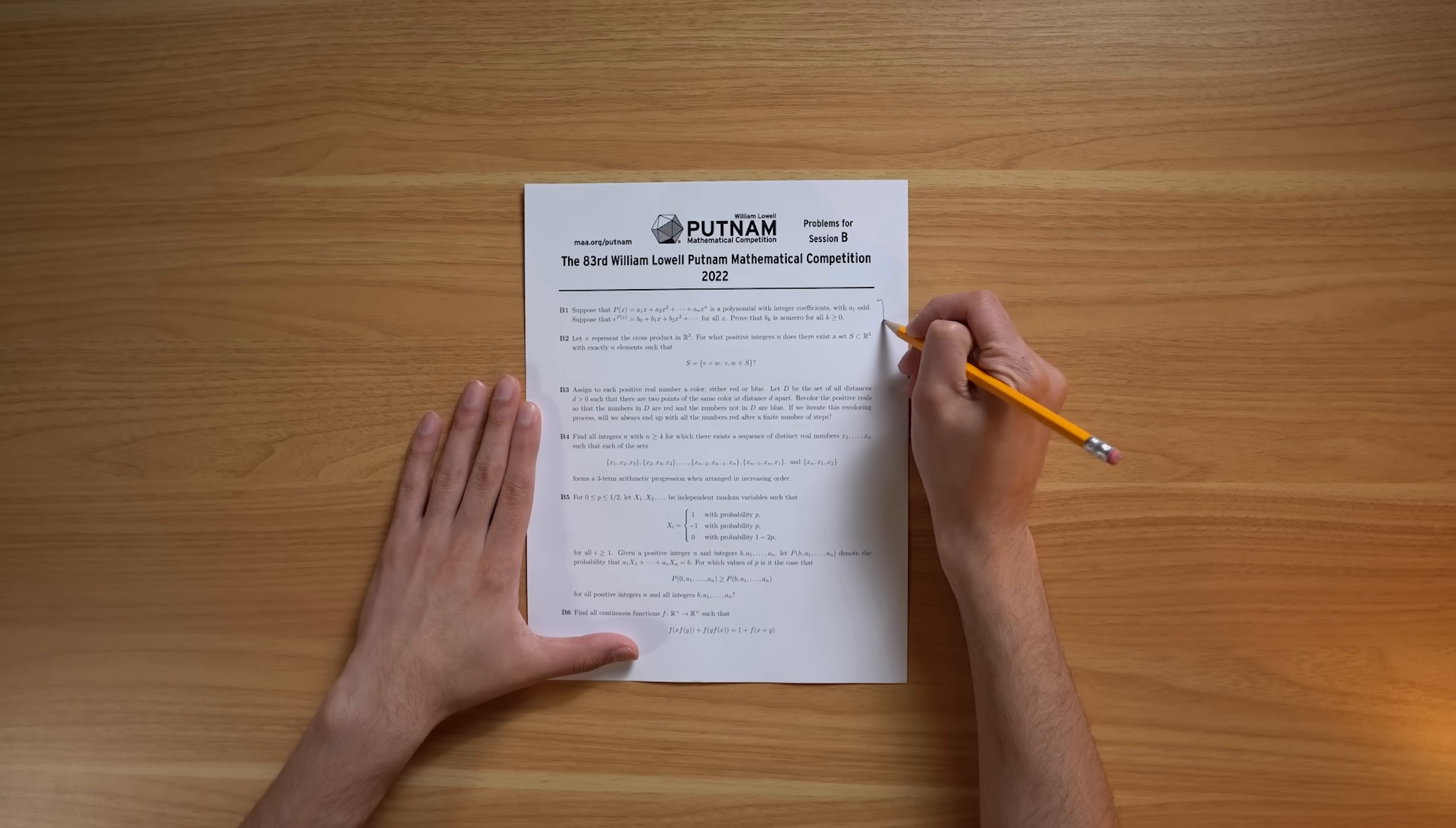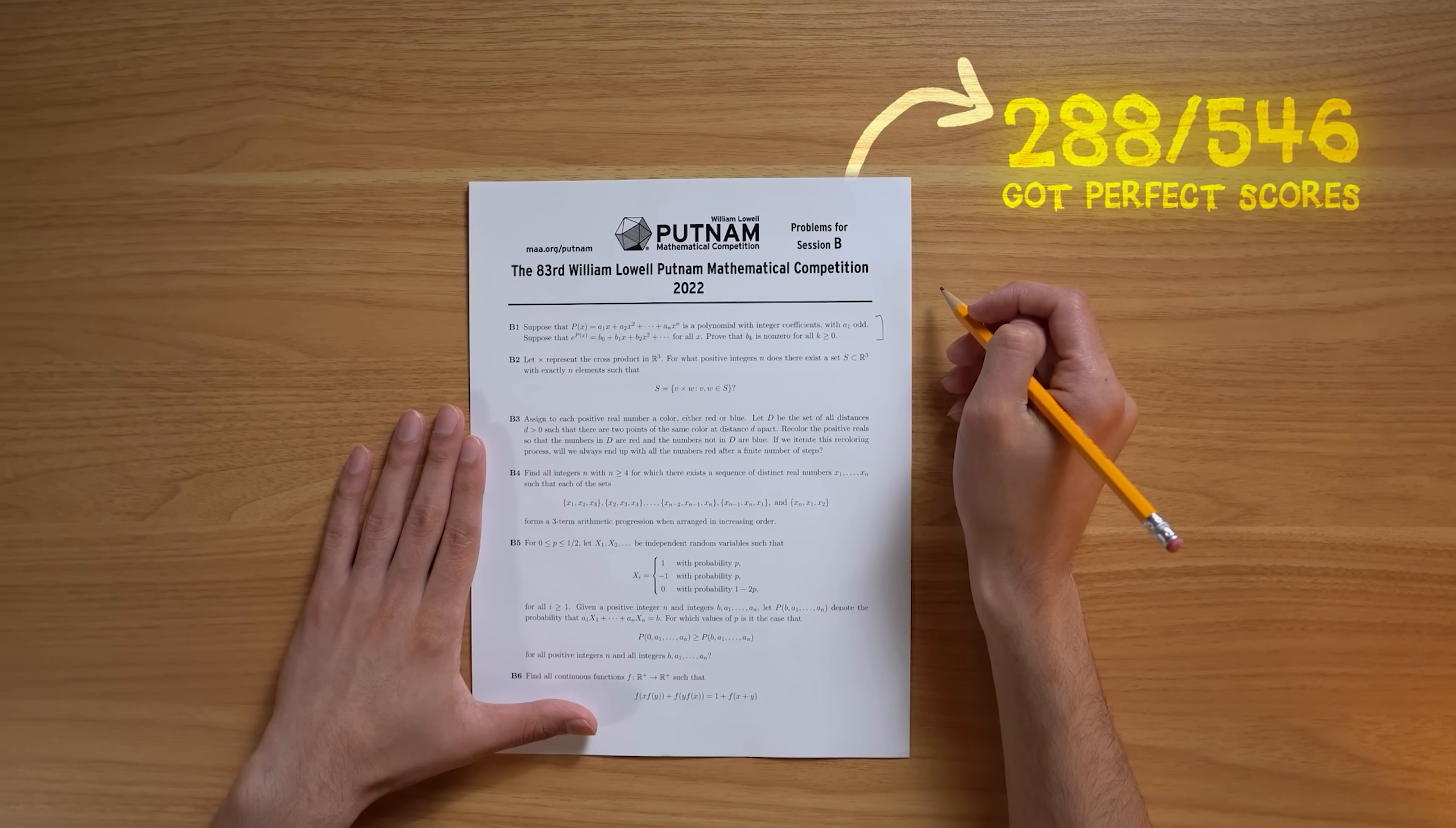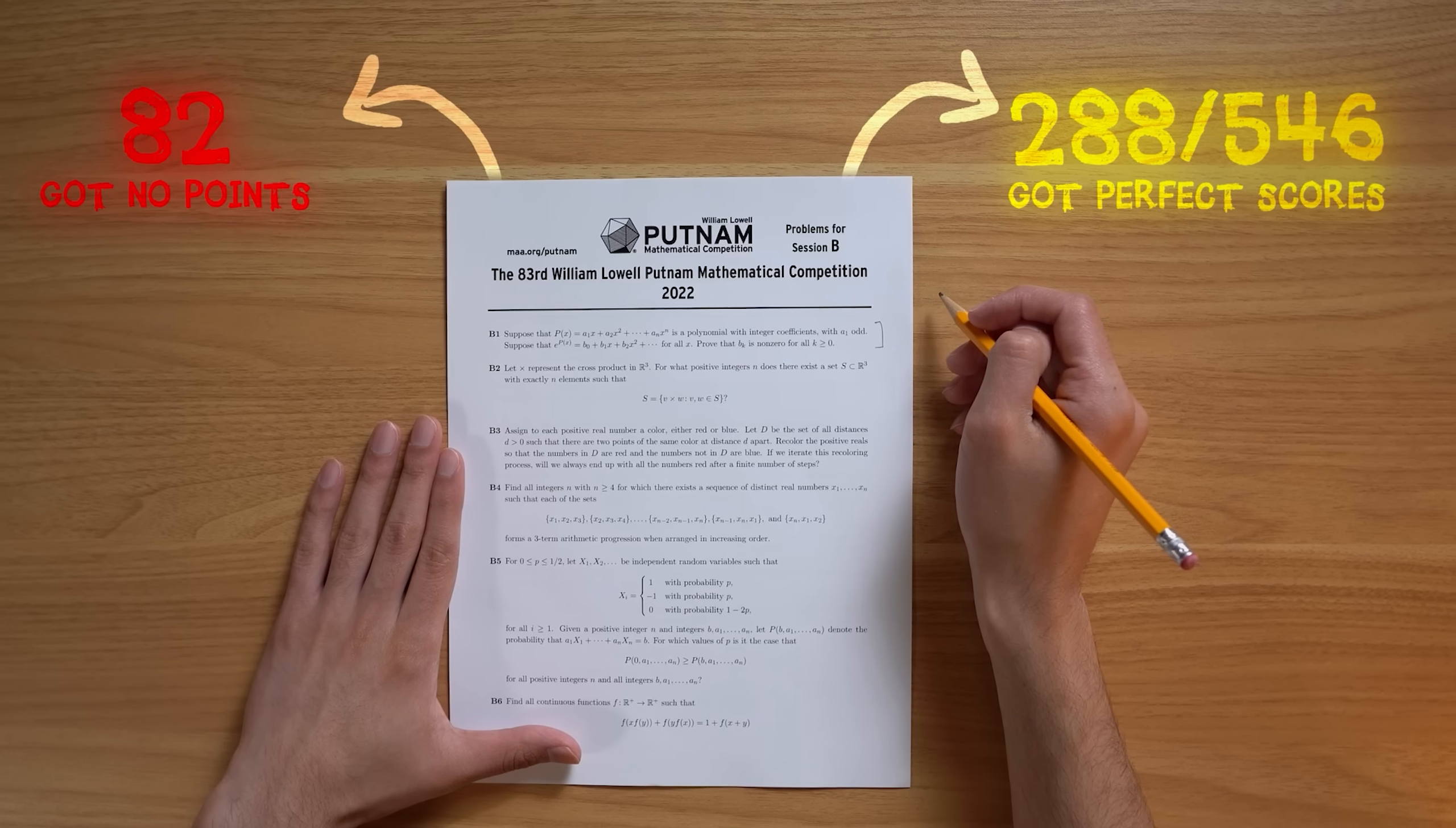Okay, but now let's look at an easier question. It's not easy, but it's easier. Take a couple seconds to read that. Cool. 288 of the 546 top scorers got a perfect score on this. Only 82 received no points. Go ahead and take a look at a couple more examples.